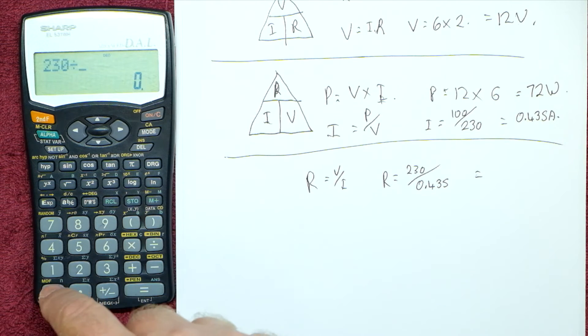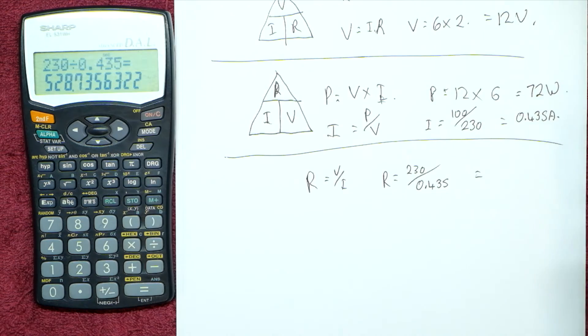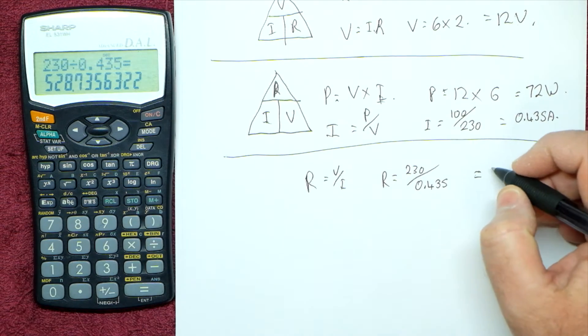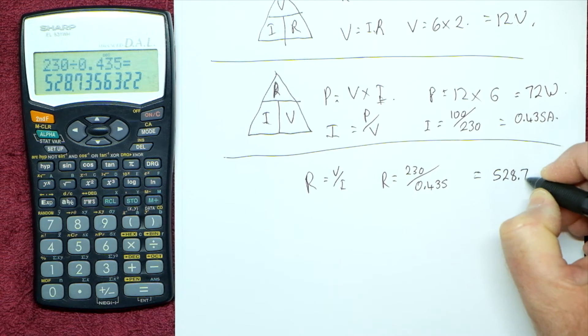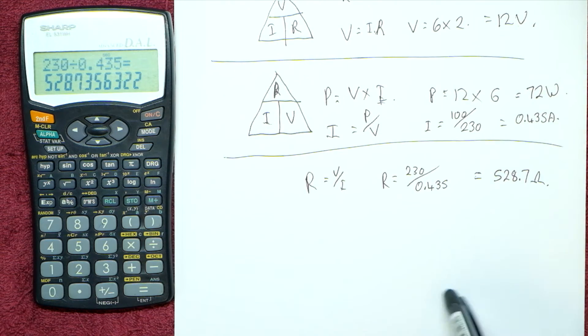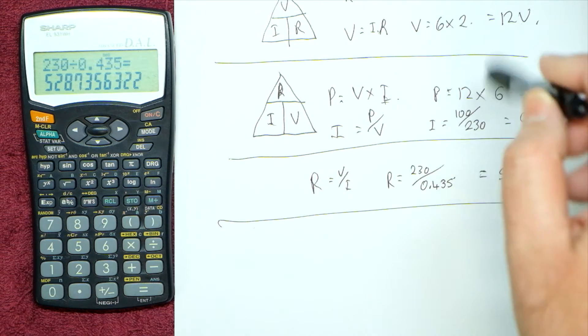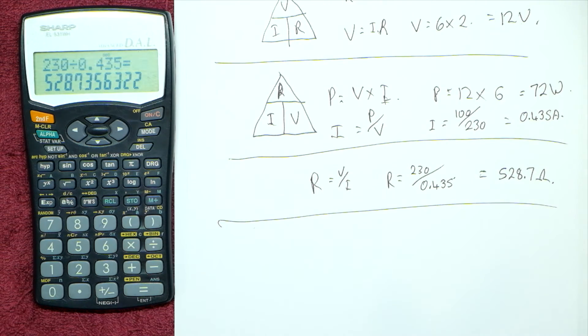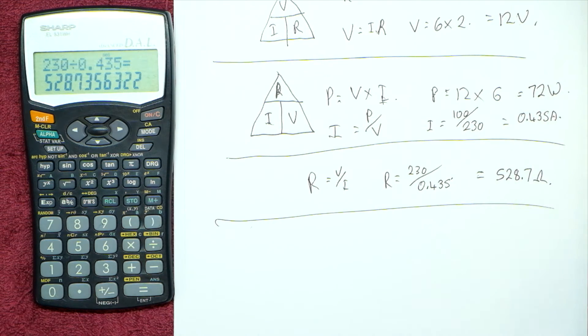230 divided by 0.435, and that would be, it's basically the AC or whatever the case may be. That would be the resistance, 528.7 ohms. Now we know this is based on a basic DC circuit, but I'm not going to go into the complexities of that. I'm just showing you how you can derive and basically adapt the formulas and bring them together to calculate different things.